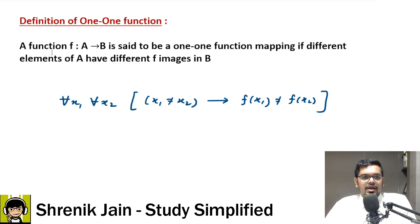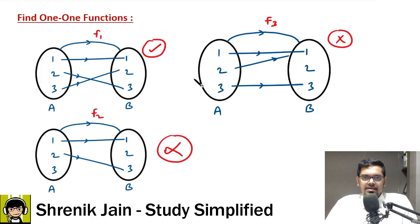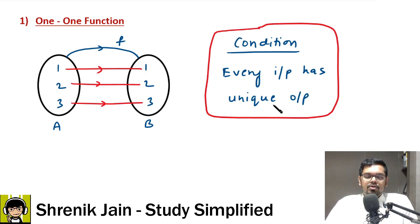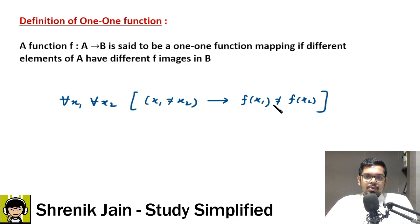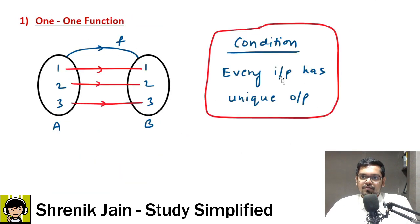The formal definition: a function f mapping set A to B is said to be a one-one function if different elements of A have different f-images in B. Pre-images are the inputs and images are the outputs — every input should have a unique image. In propositional logic: for all x1, for all x2, if x1 ≠ x2 then f(x1) ≠ f(x2). Different inputs must give different outputs.